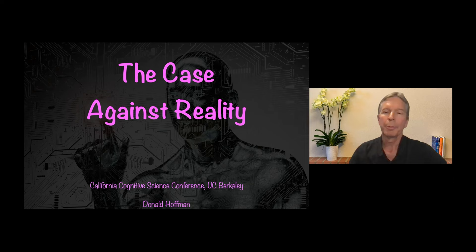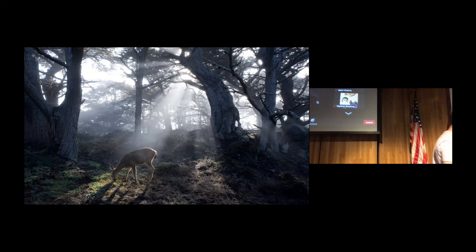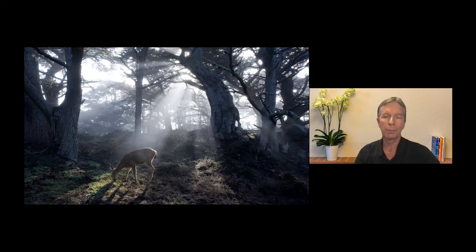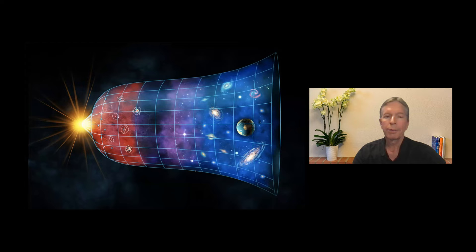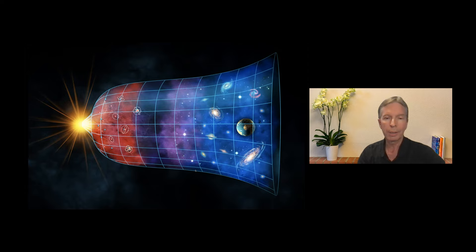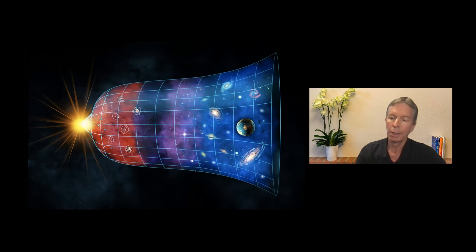Thank you very much, Ben. It's a pleasure to be here. We perceive a world of objects in space-time. For example, we see this deer, we see trees, we see fog, we see the sun, and we even see our own bodies as objects in space-time. Science, for centuries now, has had an ontology in which space-time and its objects are fundamental. Space-time began about 13.8 billion years ago in the Big Bang, and gradually got more complicated as it cooled and evolved into the objects that we see — even the organisms and life that we see today. So science has had this ontology of physical objects in space-time as being fundamental reality.